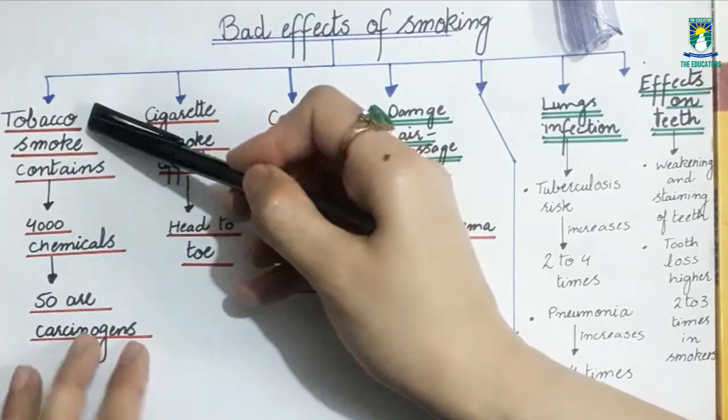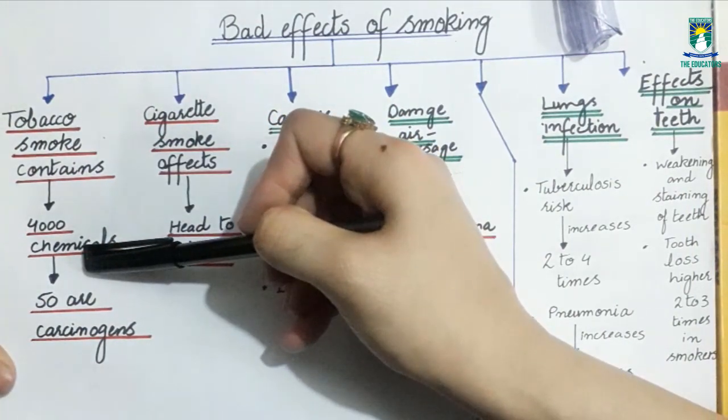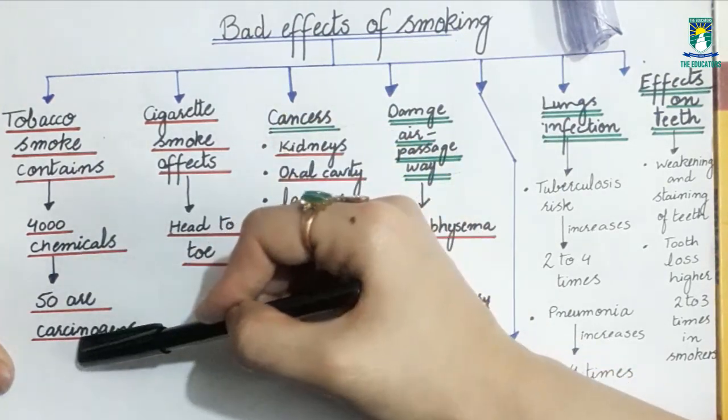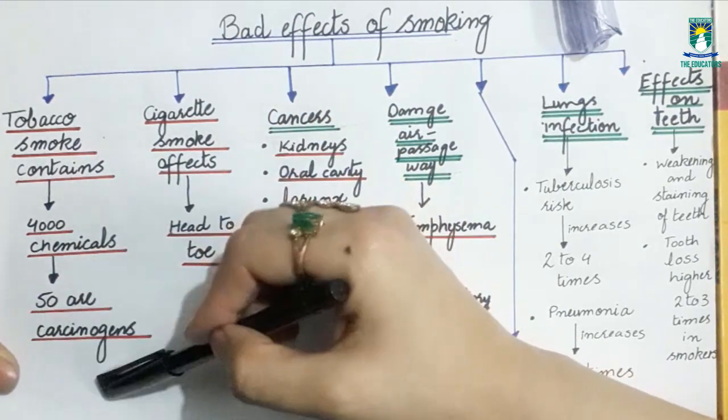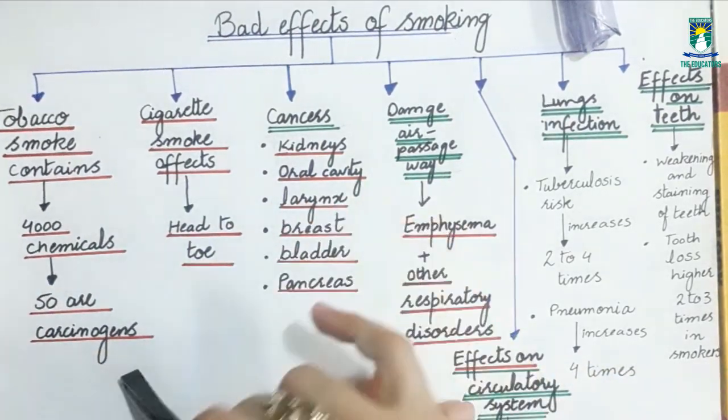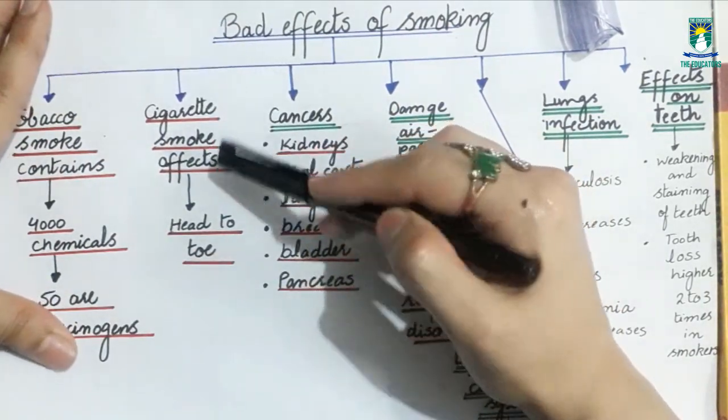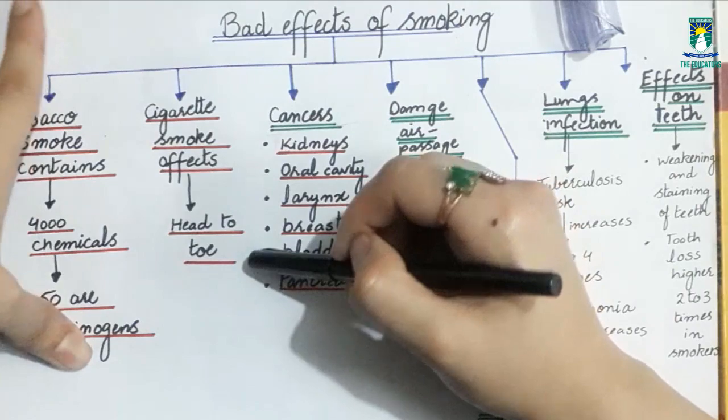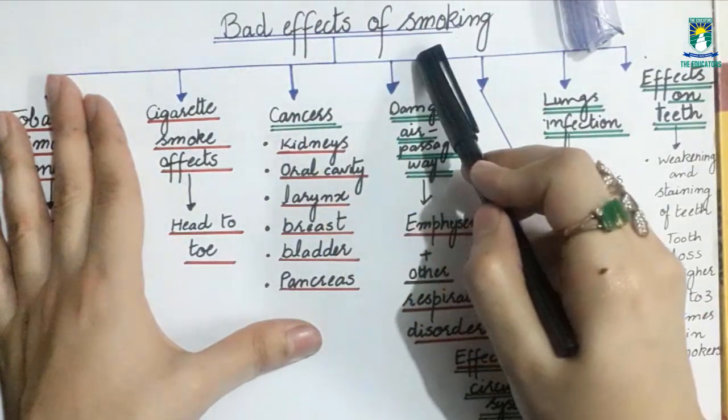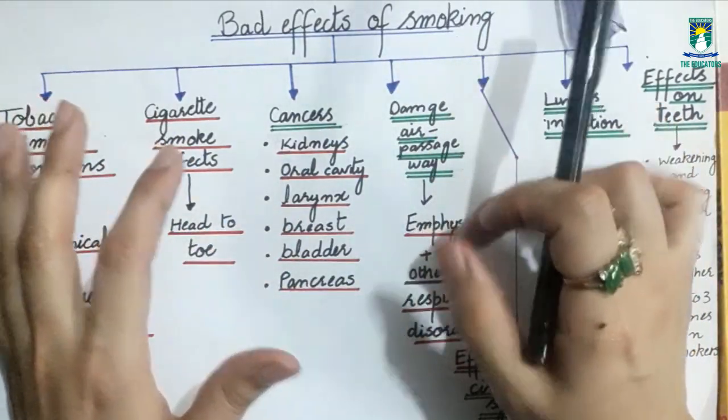Why is that? It is because tobacco smoke contains 4,000 different chemicals. There are 4,000 different chemicals out of which at least 50 are carcinogens. Carcinogens are cancer causing. And many are poisonous chemicals which can damage your body. Like cigarette smoke effects head to toe. Your body is head to toe damage due to the smoking. So now we will discuss the effects of smoking on your body.